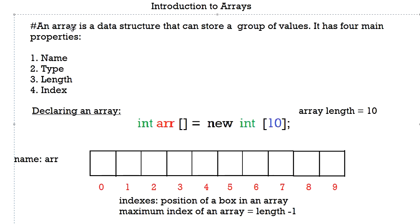An array is basically a data structure that allows us to store multiple values — basically a group of values. It has four main properties: a name, a type, a length, and an index.